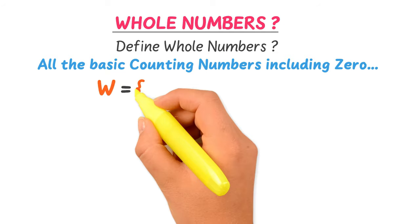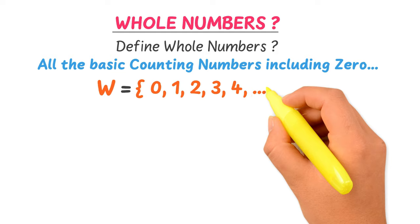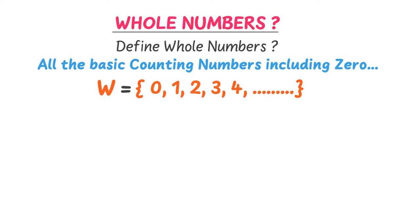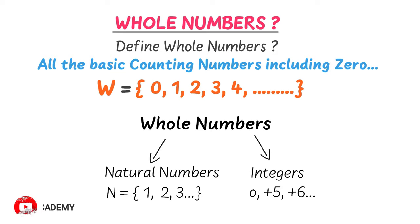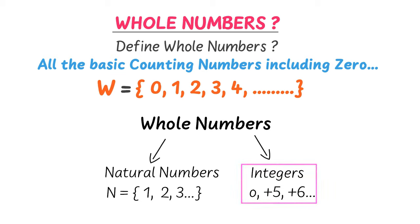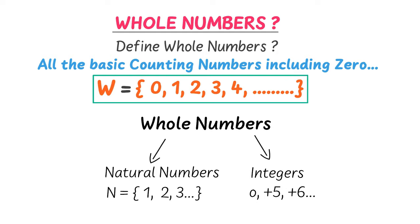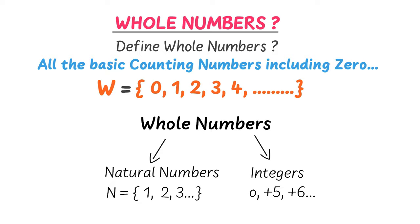The set W contains all numbers like 0, 1, 2, 3, 4, and so on. Whole numbers include natural numbers that begin from 1. Whole numbers also include all positive integers along with 0. All the positive numbers on a number line are whole numbers like 0, 5, and 6. Thus, all the numbers which we use for counting purposes including 0 are whole numbers.